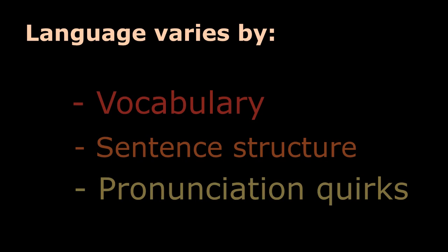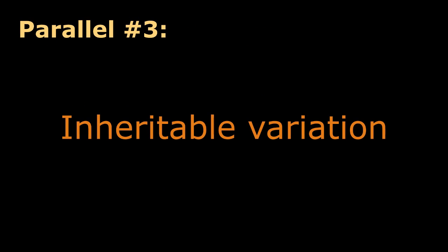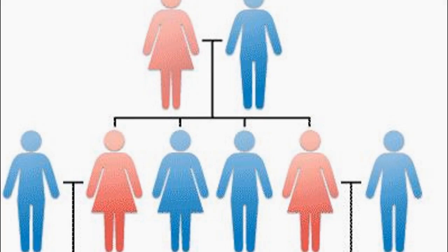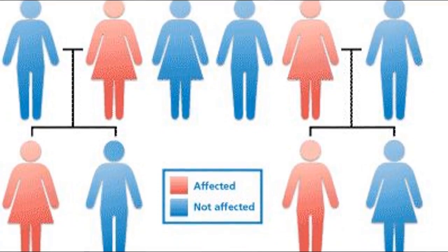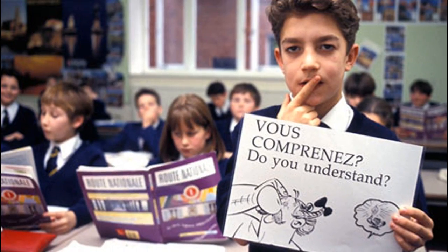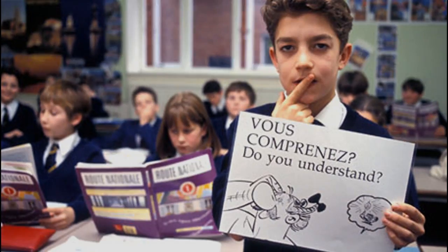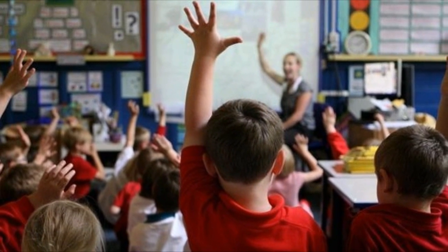Just as every individual in the population is unique in some way, we all speak in our own way through preferred vocabulary, sentence structure, and slight accents. This variation of language on an individual basis can be thought to be inheritable. Since language skills are not genetic characteristics that can be passed down through simple heredity, languages are instead inherited by being taught to young children or to non-native speakers, so that they can speak it on their own. Then they themselves may become instructors for their own children or non-native speakers in the future.